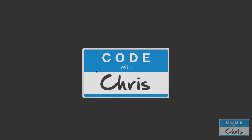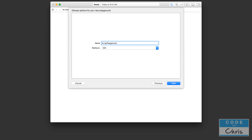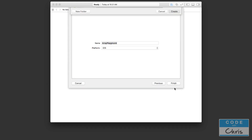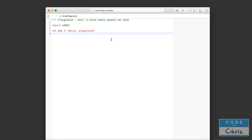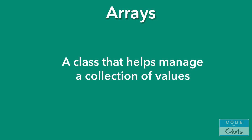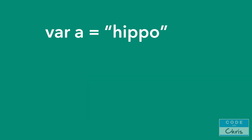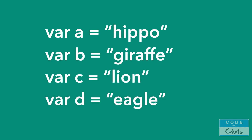Let's get started with the playground. I'm going to choose 'Get Started with a Playground', call this the Array Playground, make sure the platform is iOS, and save it on the desktop. An array is a class that helps you manage a collection of values. Take for instance you have a variable 'a' and you're assigning the string 'hippo' into it — if you had a couple more strings you'd have to declare a variable to reference each one. The more strings you have, the more variables you have to create and keep track of.